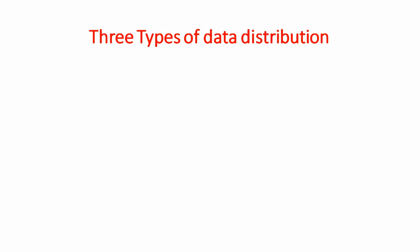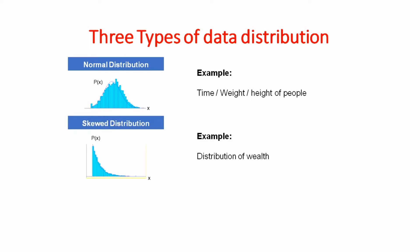Next you need to understand is three types of data distribution. So first one is normal distribution. The example of that would be time, weight, height of people. Skewed distribution. The example of that would be distribution of wealth. And uniform distribution. And the example of that would be high precision process.